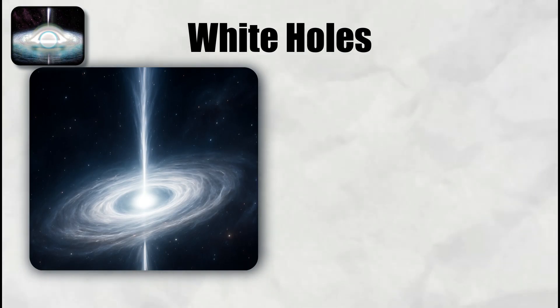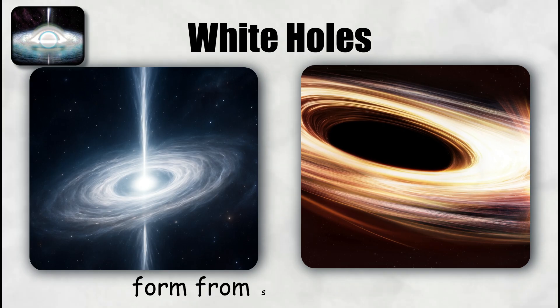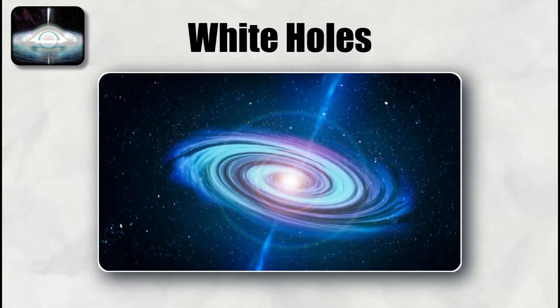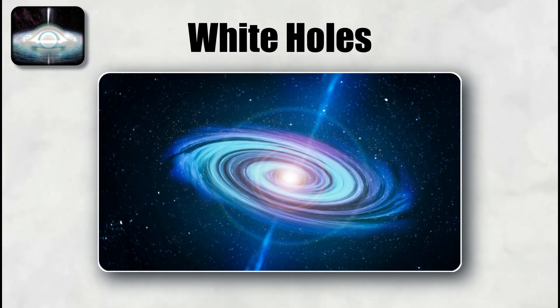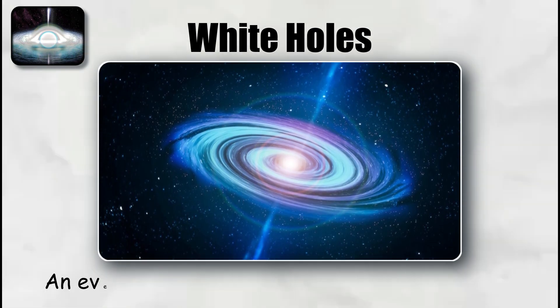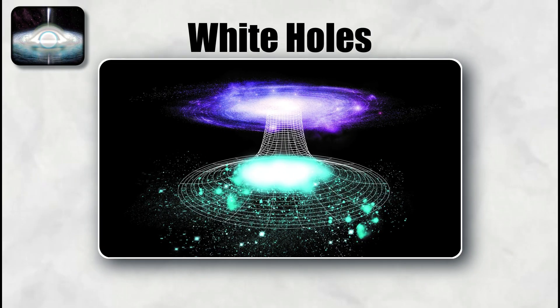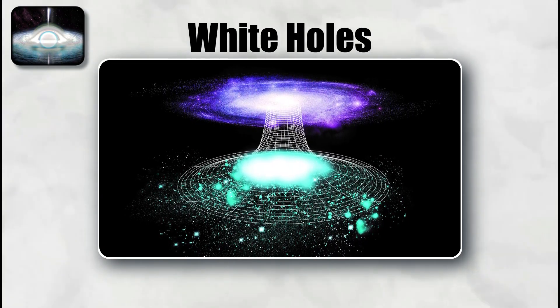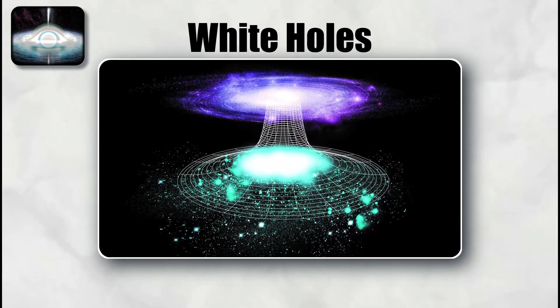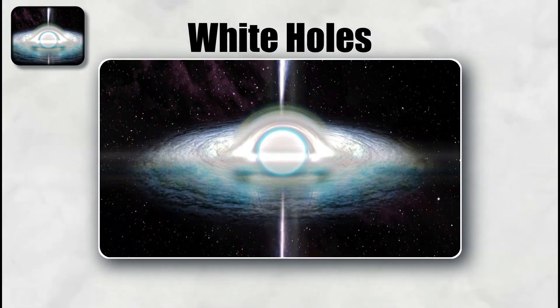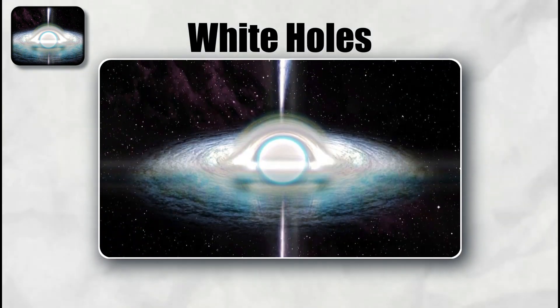Formation is the central obstacle. Black holes can form from stellar collapse, which is a causal future process. A white hole would require fine-tuned initial data in the distant past so that an event horizon already exists that only emits. Any small disturbance in that past would feed matter toward the horizon and, under time reversal, destroys the white hole state. This sensitivity implies extreme classical instability.